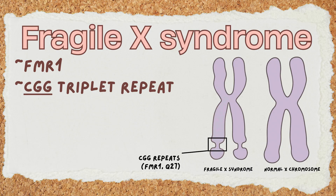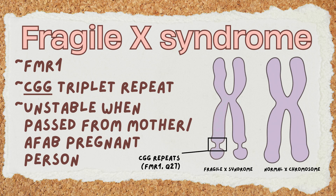The gender of the parent transmitting the gene is also a critical factor for whether the CGG repeat will expand. For Fragile X, the CGG repeat is unstable when passed from a mother. If she carries a pre-mutation, the repeat number can expand to a full mutation in her children, putting them at risk for Fragile X syndrome.